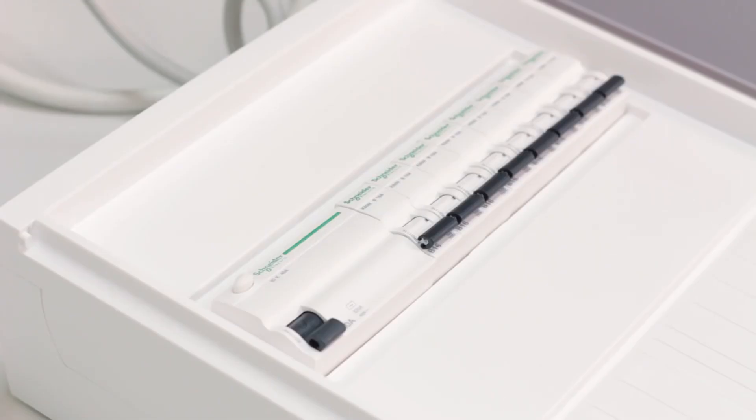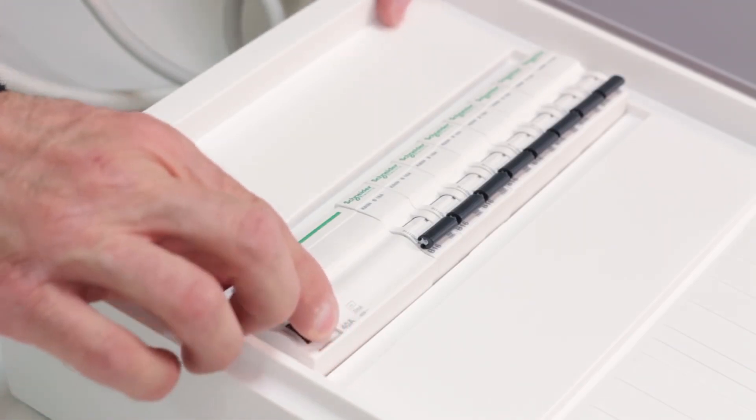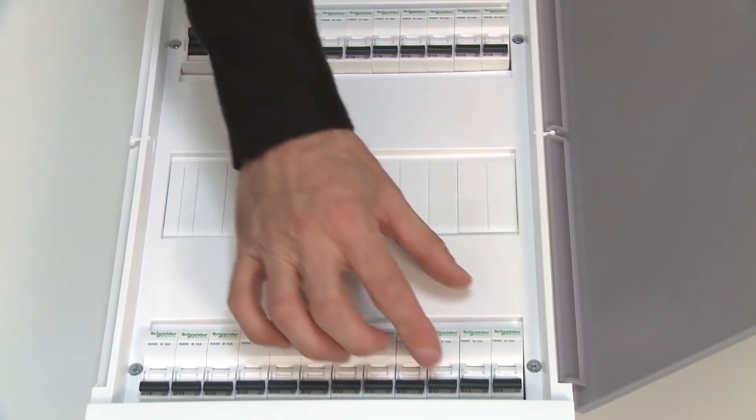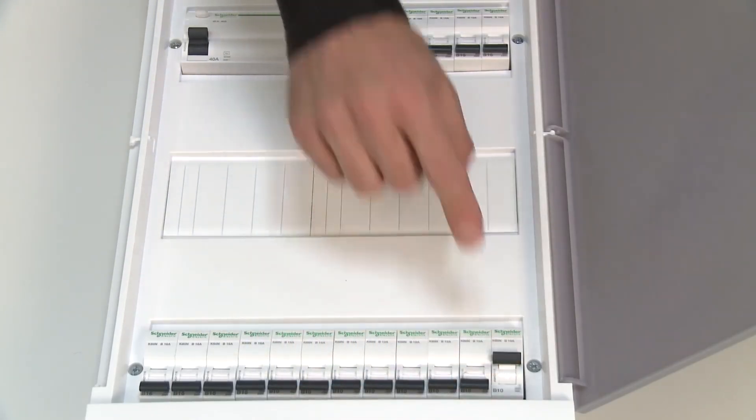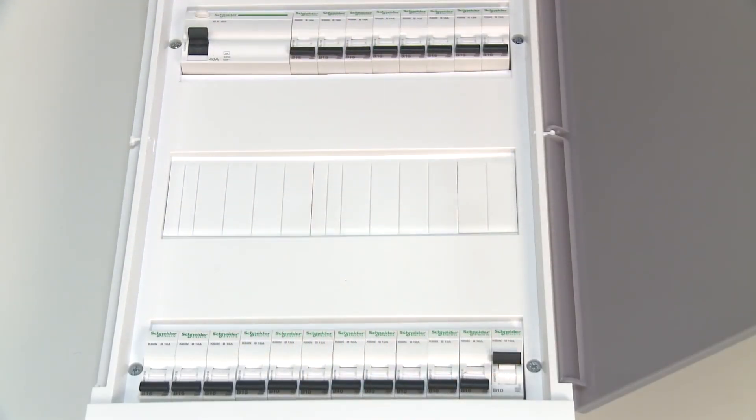We will now also test our switchboard for a short circuit. We will turn on the RSD device, turn on the circuit breaker we are testing and make a short circuit between the phase and neutral conductor.